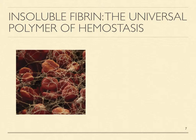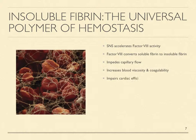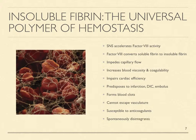I call insoluble fibrin the universal polymer of hemostasis. Nervous activity accelerates factor VIII activity that converts two-dimensional soluble fibrin to three-dimensional insoluble fibrin monomers that spontaneously polymerize into strands that reduce capillary flow, increase blood viscosity and coagulability, impair cardiac efficiency, predispose to infarction, and entangle platelets and red cells into clots. Unlike soluble fibrin, insoluble fibrin cannot escape the intact vascular system, and it is susceptible to anticoagulants.